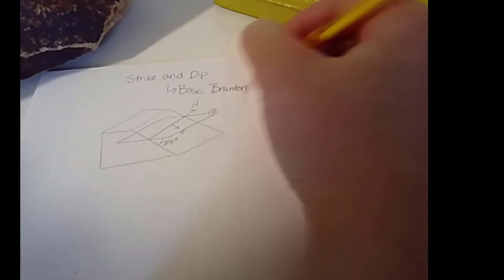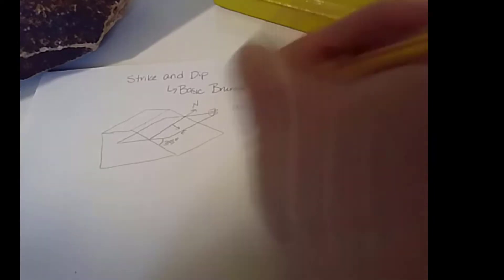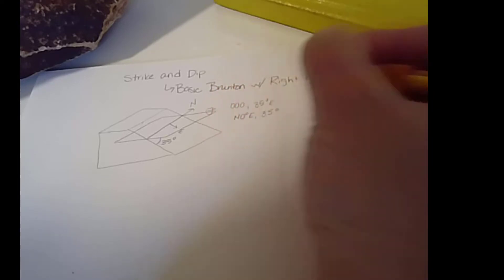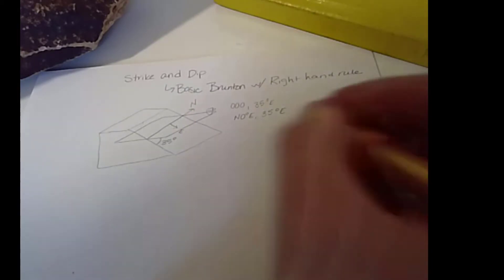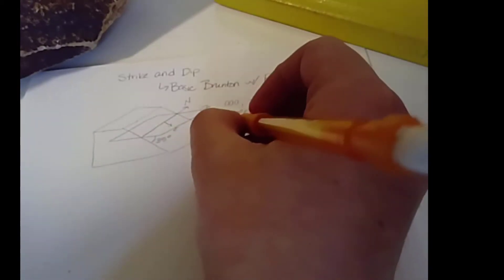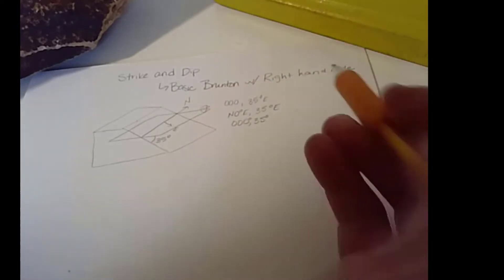You could write your strike and dip as 000, which is perfectly due north, comma, 35 degrees to the east. You could write north 0 east, 35 degrees to the east. But you'll also see sometimes people just write 000, 35.